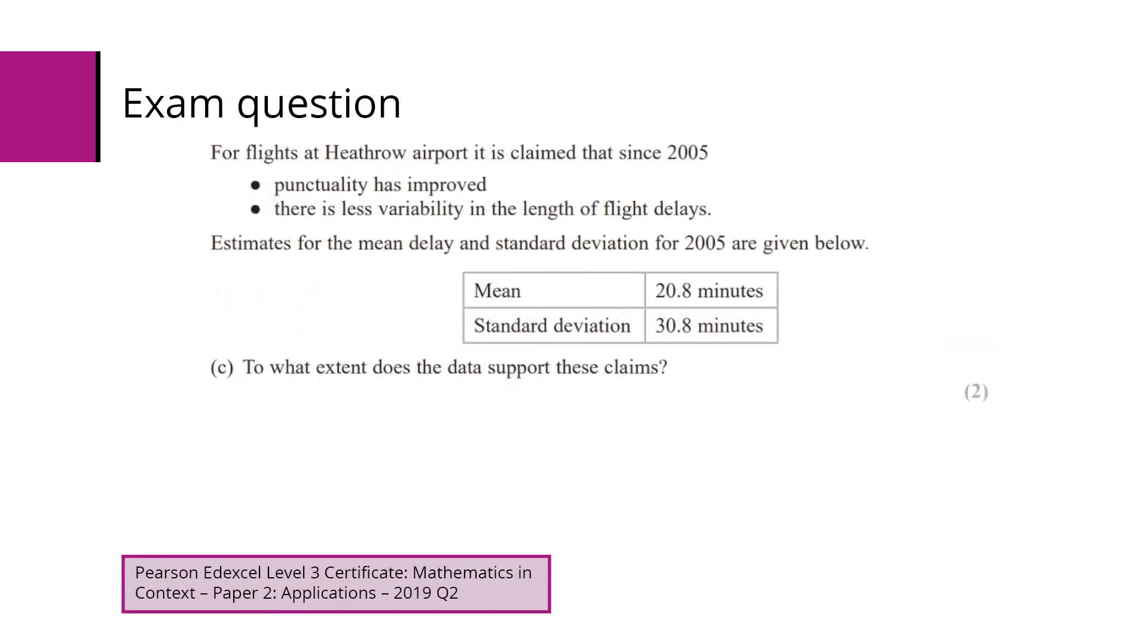Part (c) asks us to compare the data. It's claimed that since 2005, punctuality has improved and there's less variability. Here are some statistics for 2005. You might remember that the data we were looking at was 2015, so the mean for 2015 was 17.9 and in 2005 it was 20.8, so it has decreased. The standard deviation has also decreased.